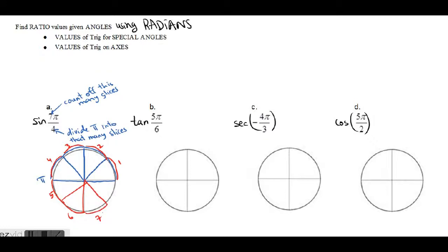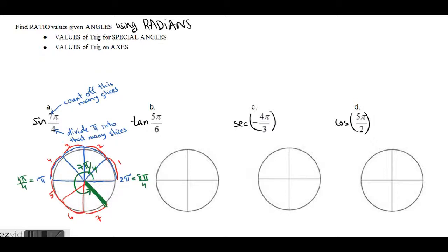A faster way: think of π written with the same denominator as the question. So π = 4π/4, and 2π = 8π/4. Since you're looking for 7π/4, you're just one slice less than 8π/4, so the final answer lands right here. I'll make it really bold so that's the actual rotation of 7π/4.